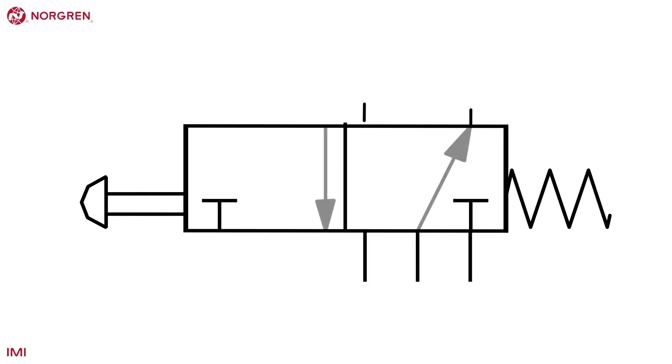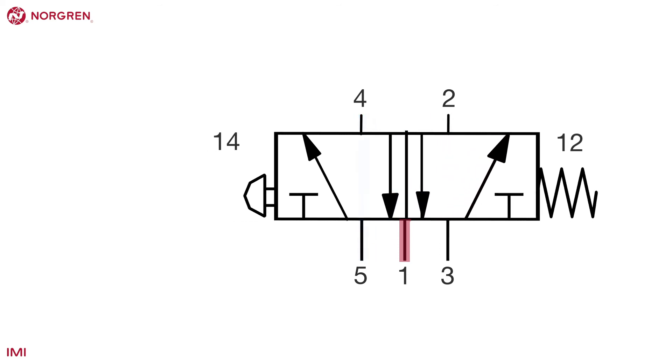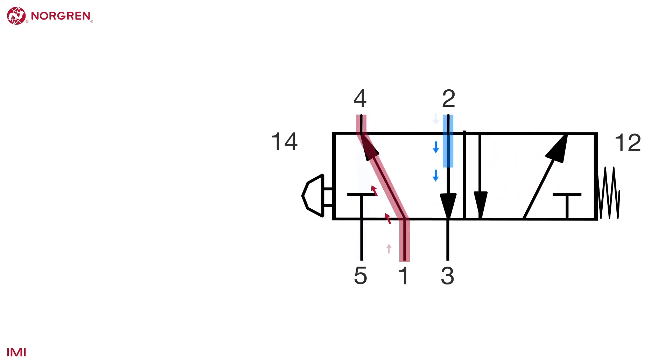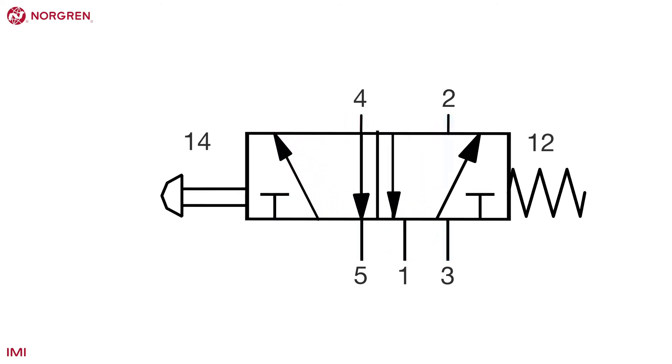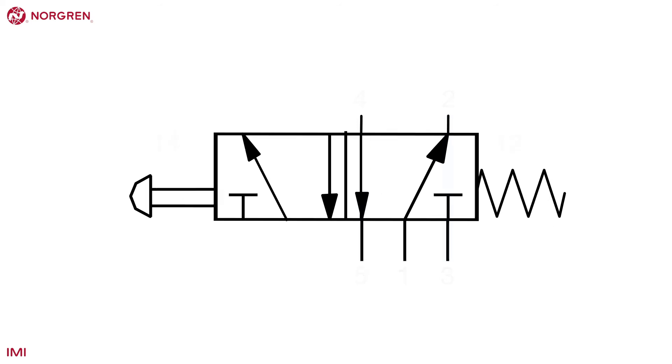You can see the operation more clearly in this diagram. Two boxes represent 2 positions and the ports are numbered. When the air flows to port 2, the air from port 4 passes to the exhaust. When the air flows to port 4, the air from port 2 passes back through the exhaust. A 4-2 valve is less common and is not shown here. These valves are similar to a 5-2 valve, but share an exhaust port.